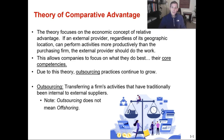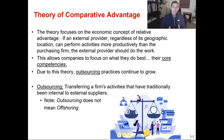Let's start by talking about the theory of comparative advantage. The theory focuses on the economic concept of relative advantage. If an external provider, regardless of its geographic location, can perform activities more productively than the purchasing firm, then the external provider should do that work. It helps organizations to focus on what they do best — their core competencies. For instance, if you are Apple and you make phones or computers, your core competency is the design, the differentiation, creating products that people love.